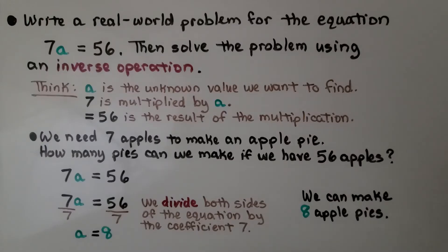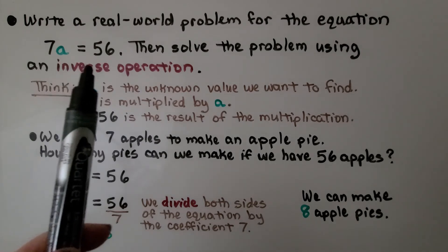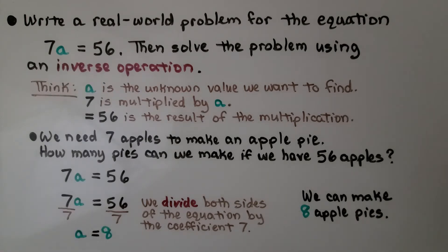Here it's telling us to write a real-world problem for the equation 7a equals 56, then solve the problem using an inverse operation. So we think a is the unknown value we need to find, 7 is multiplied by a, and equals 56 is the result of the multiplication.